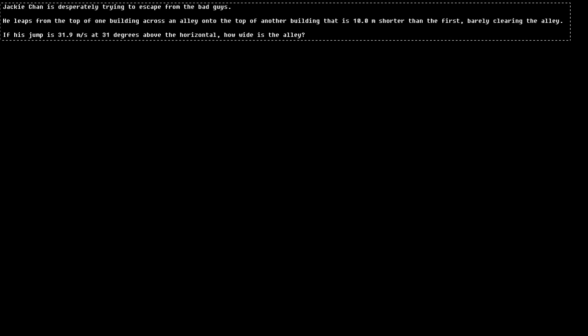So Jackie Chan is desperately trying to escape from the bad guys. He leaps from the top of one building across an alley to the top of another building that is 10 meters shorter than the first, barely clearing the alley. If his jump is 31.9 meters per second at 31 degrees above the horizontal, how wide is the alley?